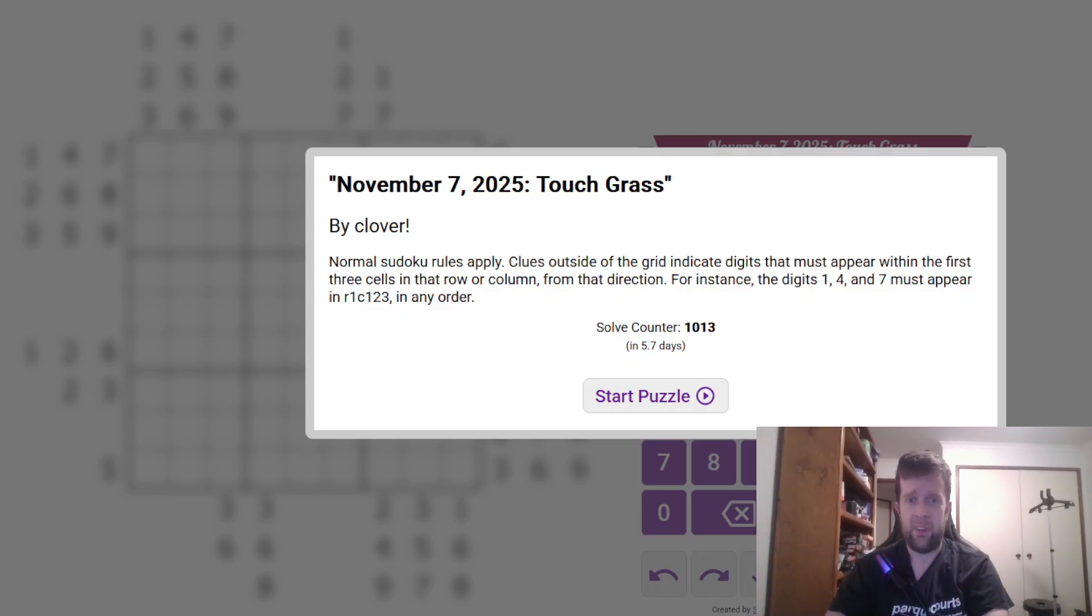You'll find the link to today's puzzle in the description down below. You'll also find hat times two hats for a very fast time, one hat for a pretty fast time, and everyone gets a dinosaur because we love you all equally. That being said, pardon me, I'm going to get into it.